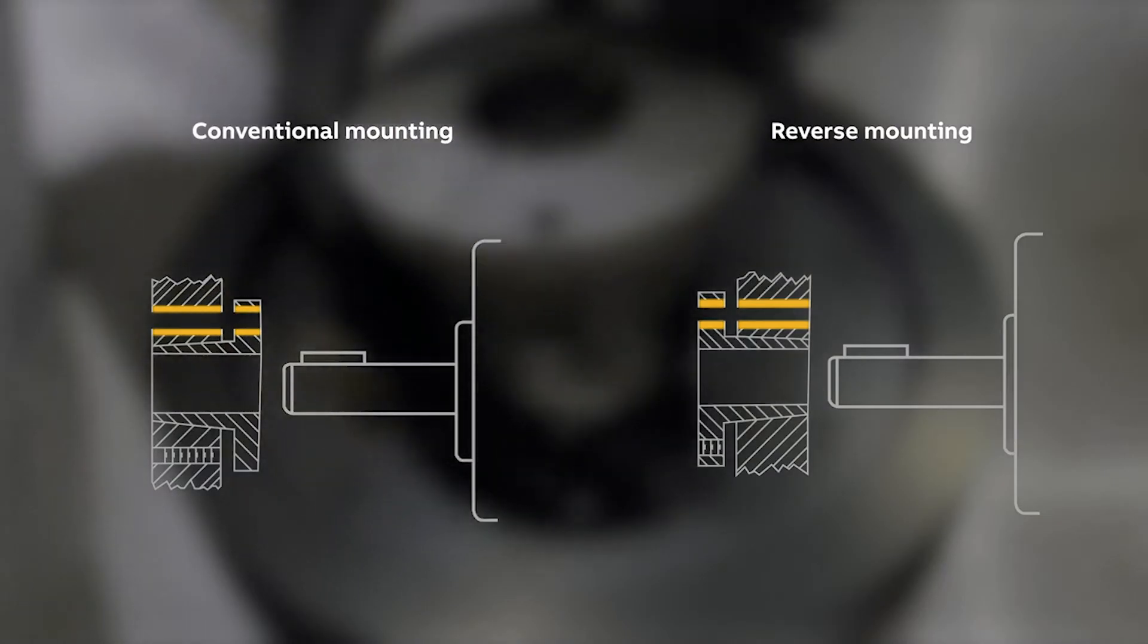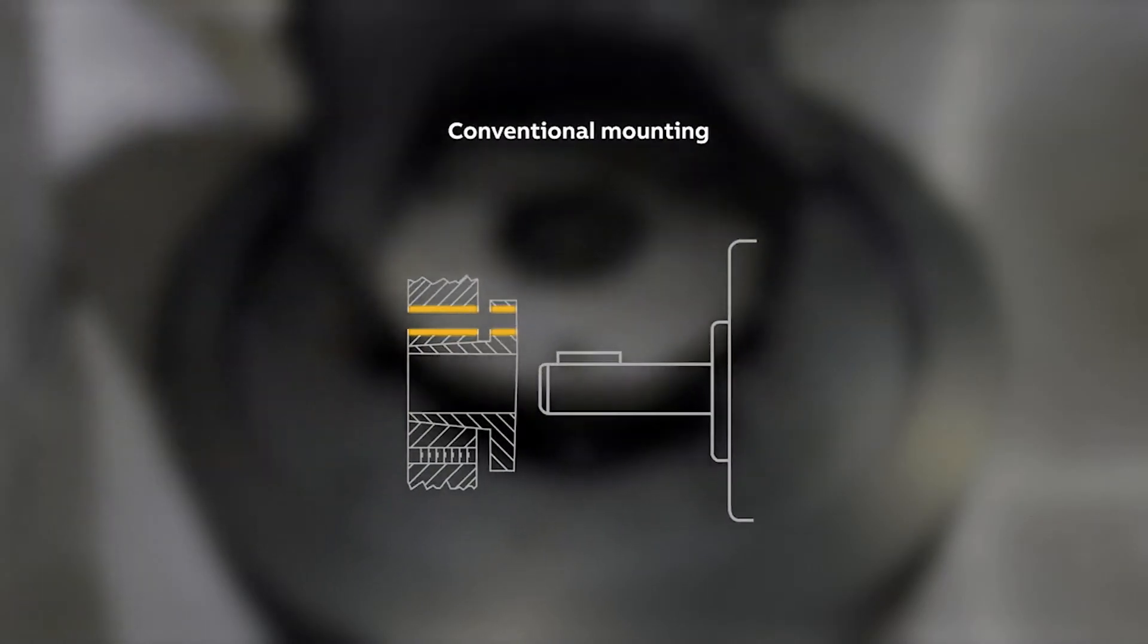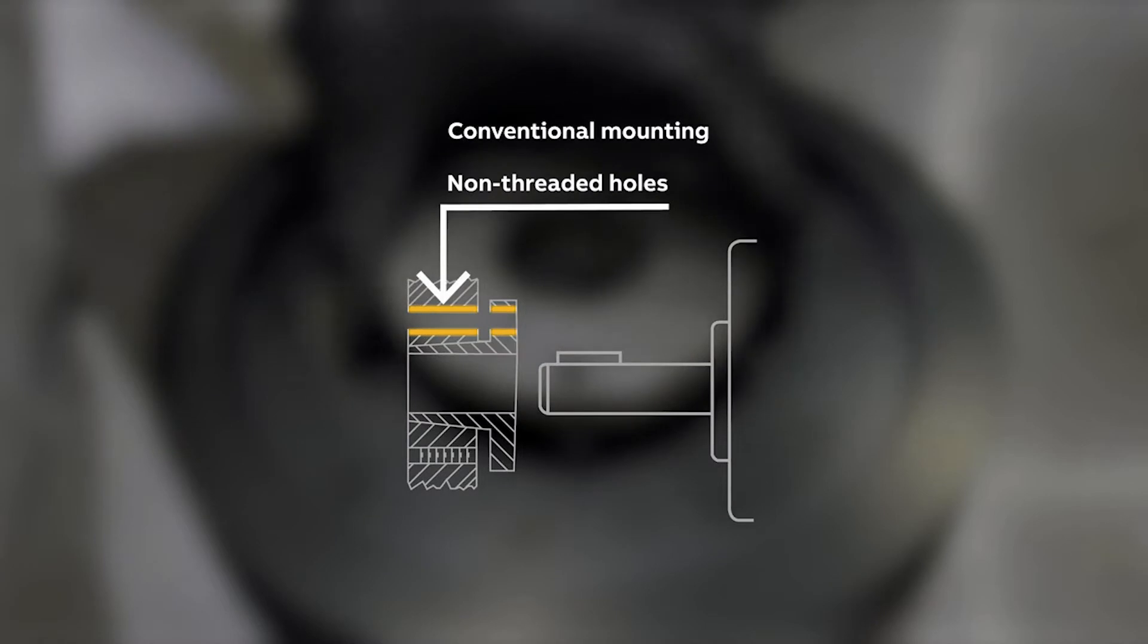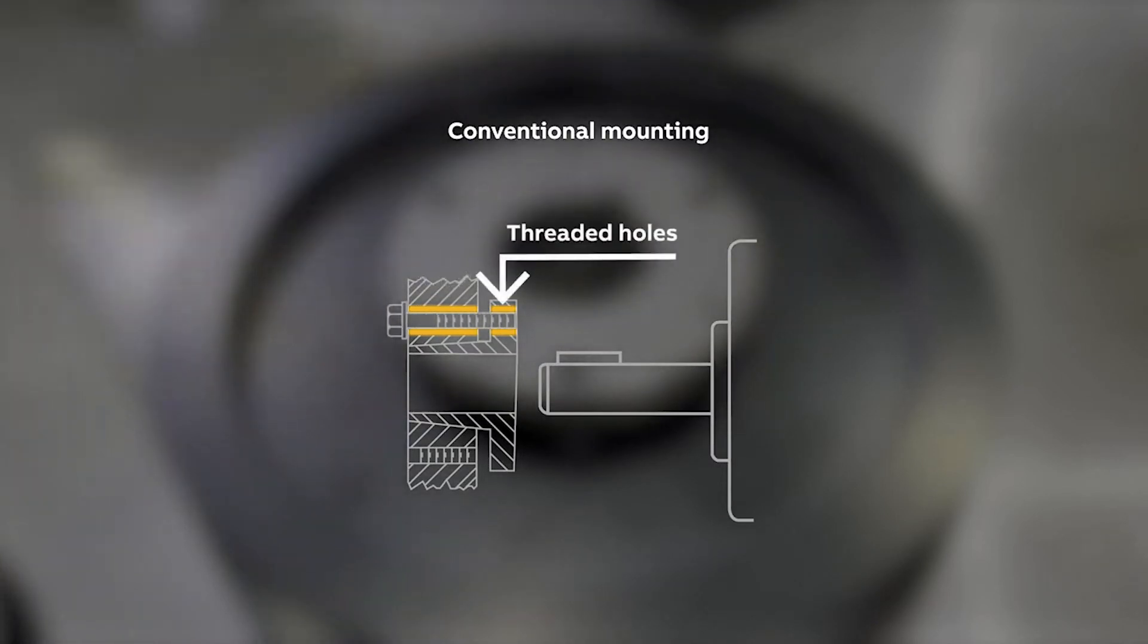For conventional mounting, align the holes so that the bolts can be placed through the non-threaded holes in the hub and into the threaded holes of the bushing.